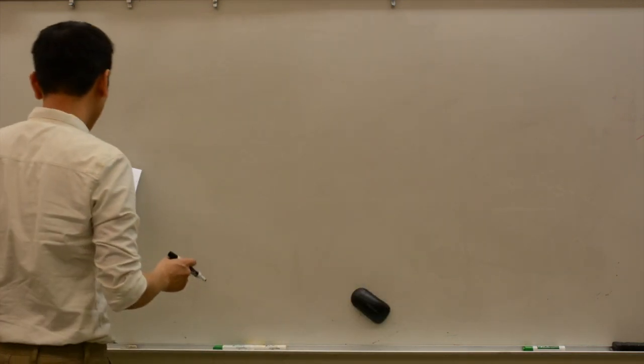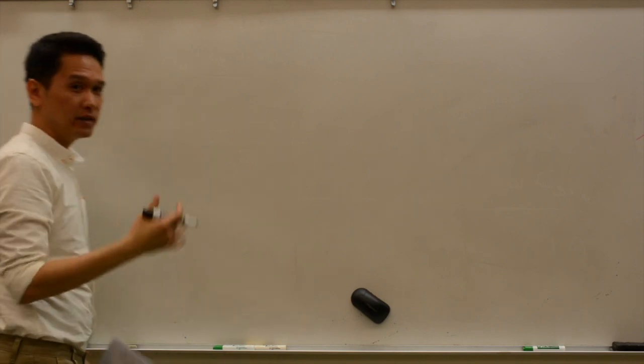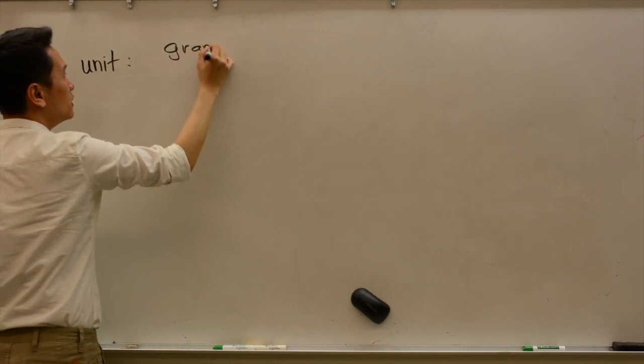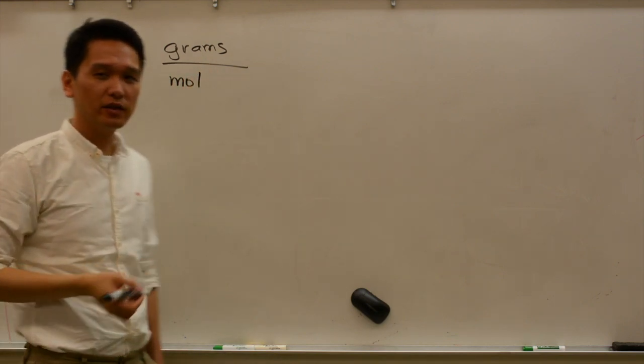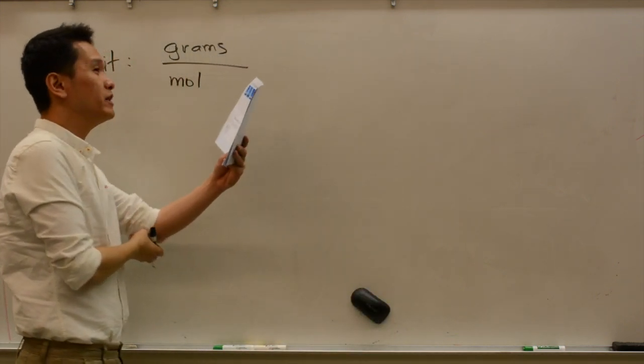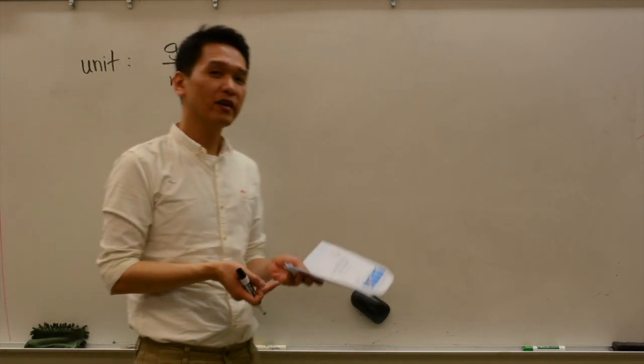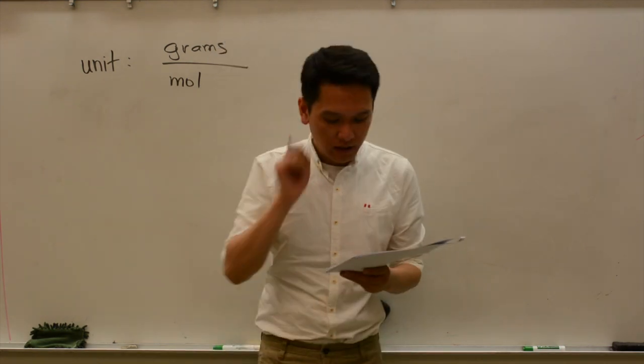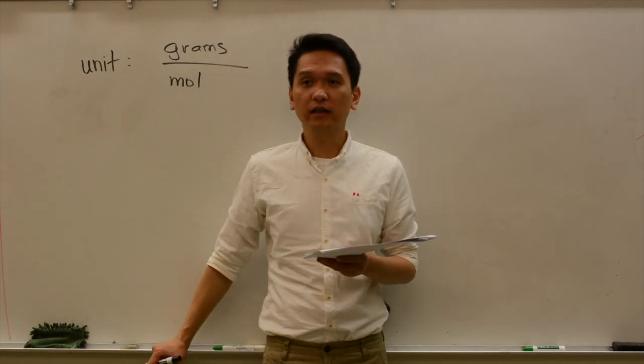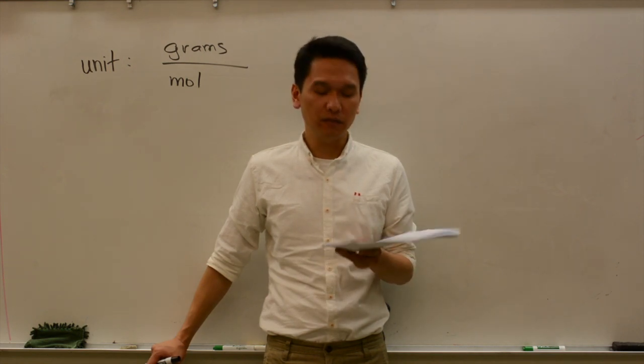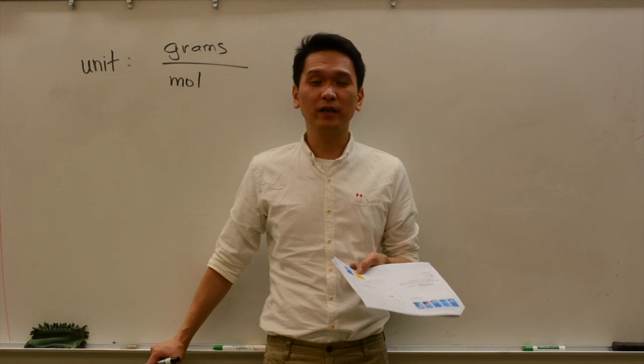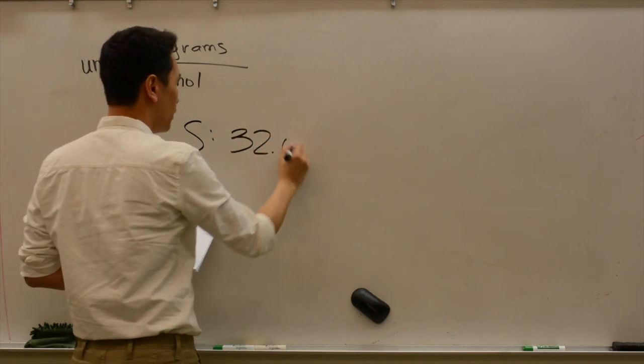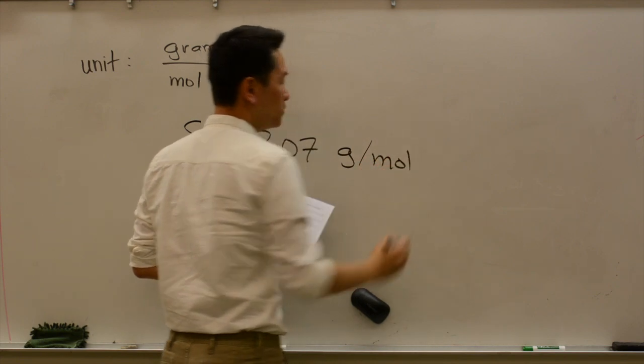The unit is going to be grams of something per mole. So the molar mass unit is grams per mole. And how will we know the molar mass of something? Conveniently enough, if you look at the periodic table, remember we learned about the atomic mass? That is also the molar mass. So when you take a look at sulfur, underneath the elemental symbol, it reads 32.07. You can translate that to mean that the molar mass of sulfur is 32.07 grams per mole.